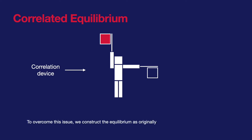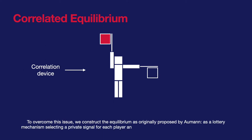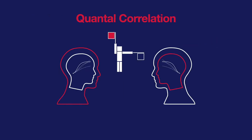To overcome this issue, we construct the equilibrium as originally proposed by Aumann as a lottery mechanism selecting a private signal for each player and a solution in the corresponding extended game.